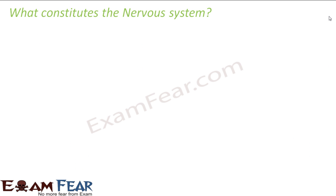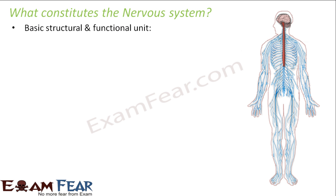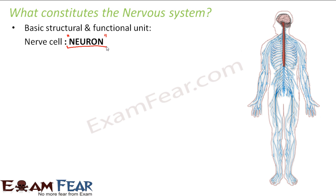What actually constitutes the nervous system — what transfers information from one part of the body to another? The basic structural and functional unit of the nervous system is the nerve cell, also known as a neuron. Just as the cell is the basic unit of a living organism, neurons are the basic structural and functional unit of the nervous system.